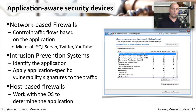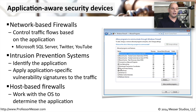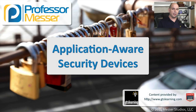The firewalls that are inside all of our hosts — our Windows firewalls, for instance — are very aware of the applications that are running on our computers. So it knows if you're using a browser, if you're performing an FTP, or if you're using home group or file and printer sharing. You're able to make security decisions based on what application is there and whether that application should allow access from somebody else on the inside or outside of your network.